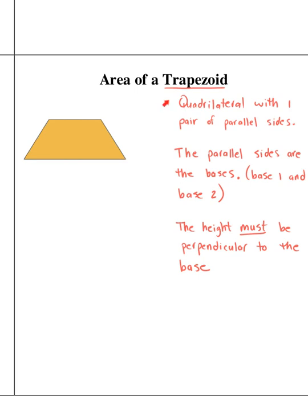First off, we need to remember that a trapezoid is a quadrilateral with one pair of parallel sides.